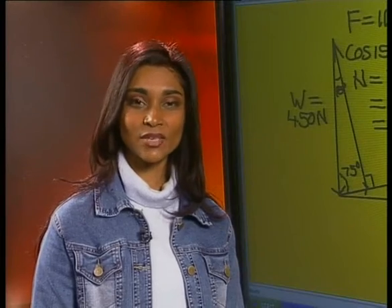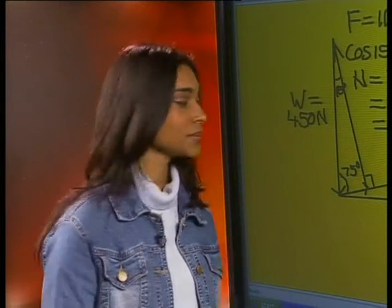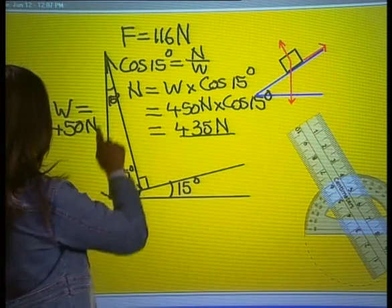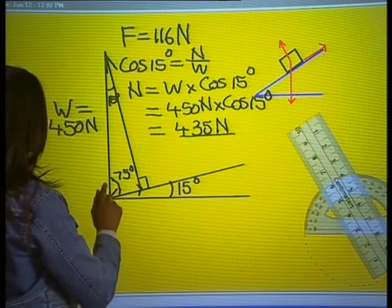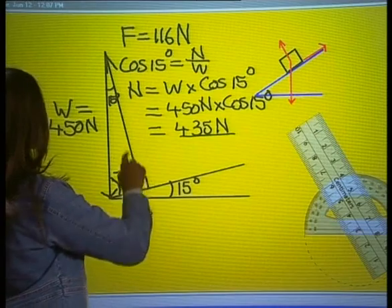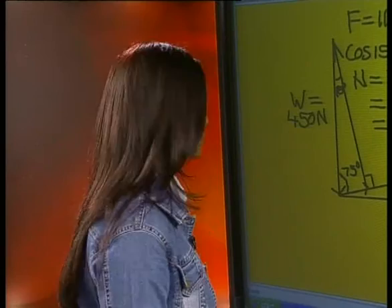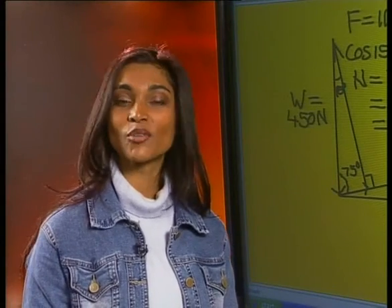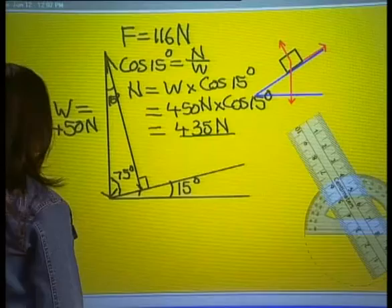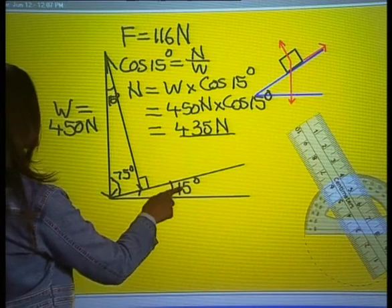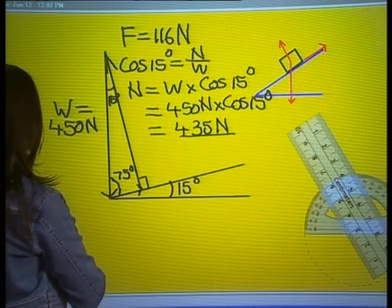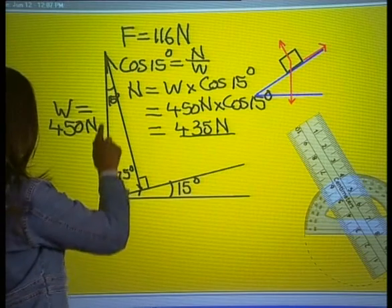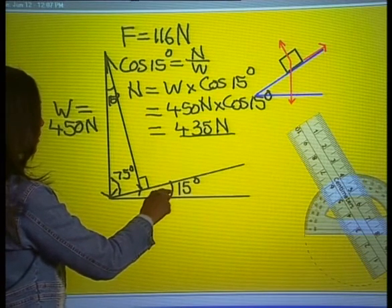Before we end the lesson let's review what we have learned. We solved the problem using trig ratios. This can be easily done because a triangle of forces for a body at rest on an inclined plane will always give us a right angle triangle of forces, so there was no need to construct an accurate scale diagram. To solve the problem I constructed a sketch and filled in all the information we know. It is also very useful to know that the angle between the normal and the weight force vector will always be equal to the angle of inclination.